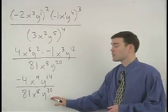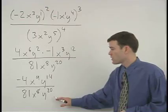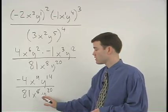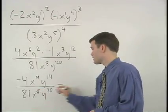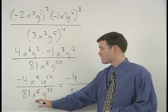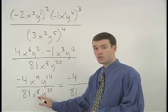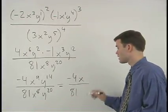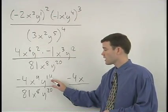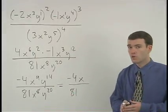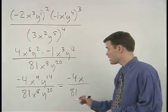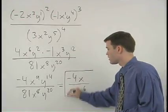Finally, we apply our quotient rule. Remember that the quotient rule states that when you're dividing powers that have the same base, simply subtract their exponents. So we have our coefficients of negative 4 over 81. For our x's, we take 9 minus 8, which is 1, so we have x to the 1st, or x. And notice that for our y's, the exponent in the denominator is greater than the exponent in the numerator. In this situation, we still take the difference between our exponents, which is 6, but the y to the 6th goes in the denominator of your answer.